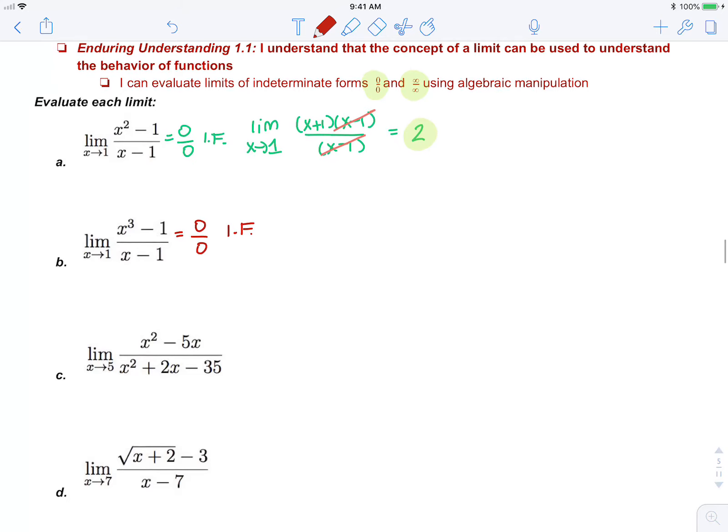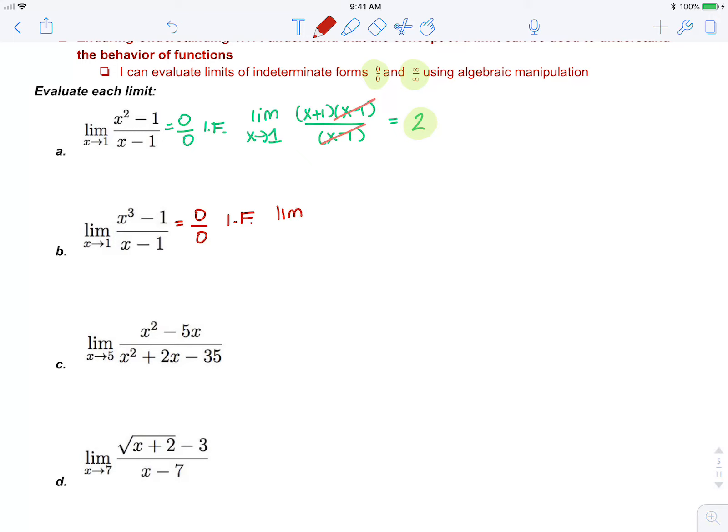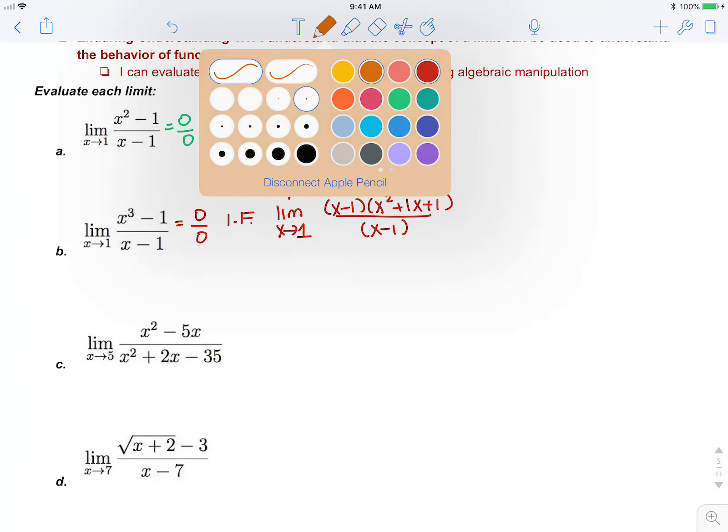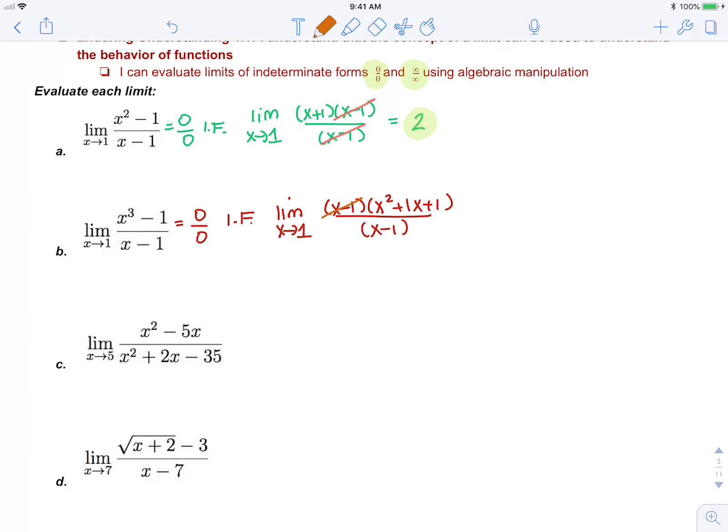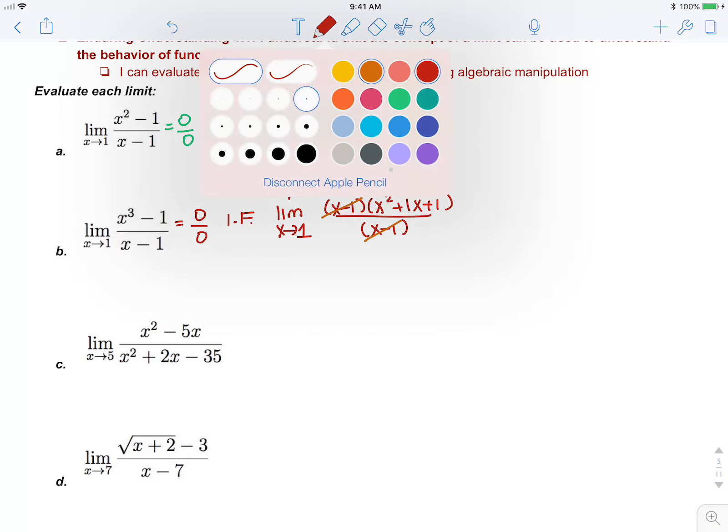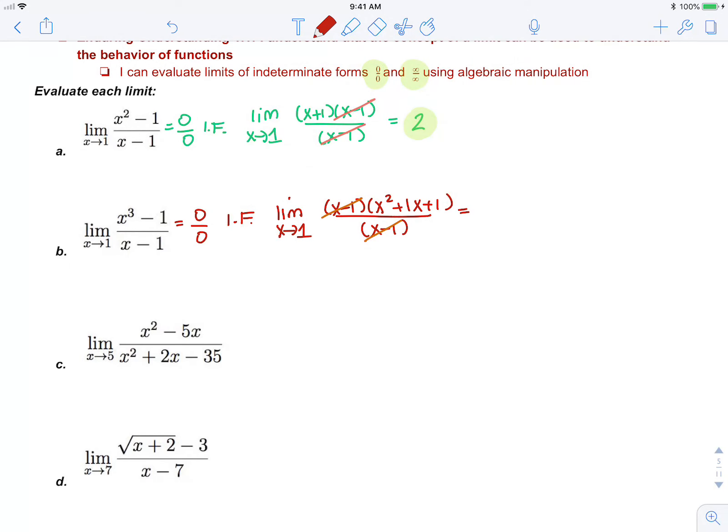The numerator factors, it's a sum of cubes, or difference of cubes. So that's x minus 1, x squared plus 1x plus 1, all over x minus 1. And then these factors cancel. Now I can do direct substitution. That's 1 plus 1 plus 1, which is 3.